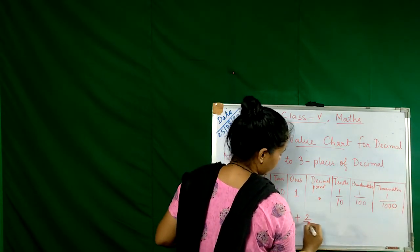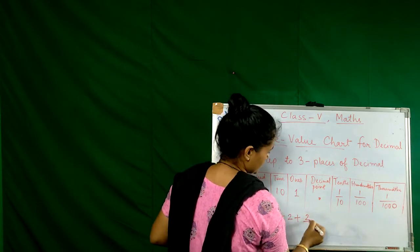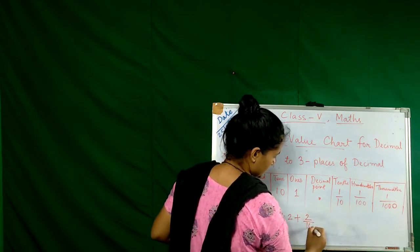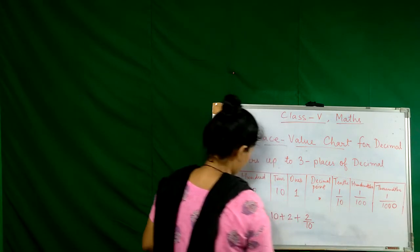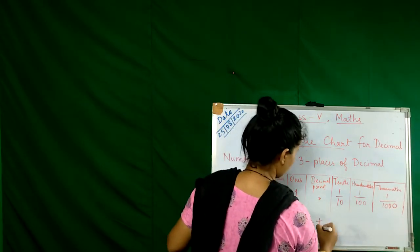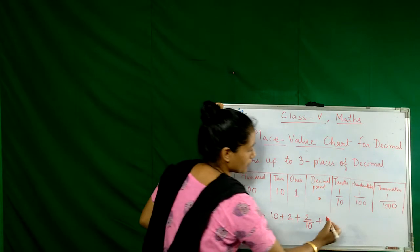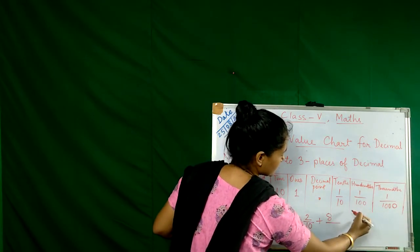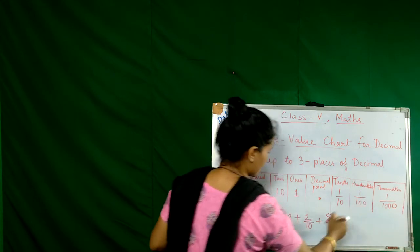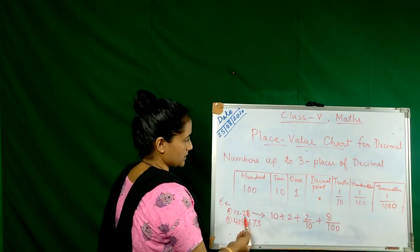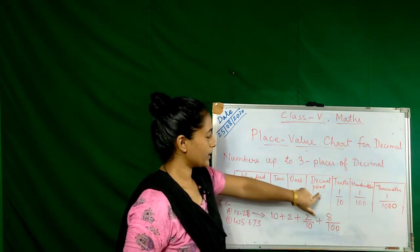And then eight is here, so we have to write eight over hundred. We have to write hundred because two digits is here after decimal. We have to write on these sides.